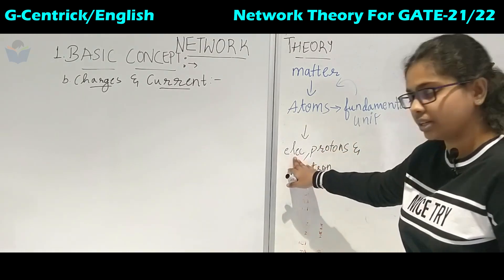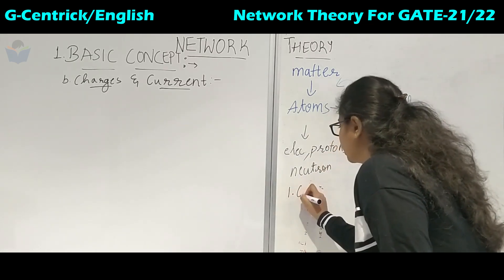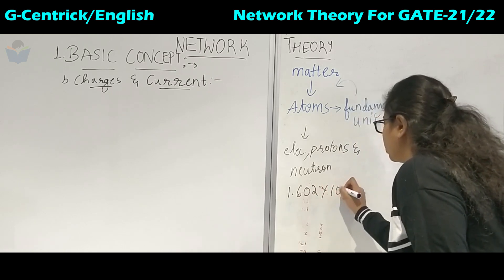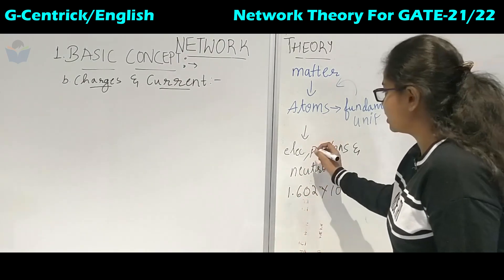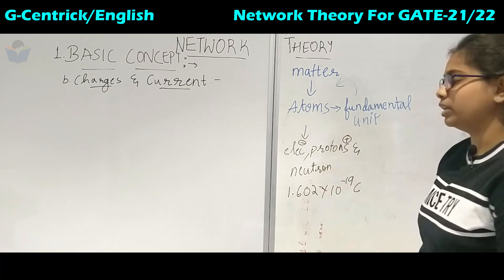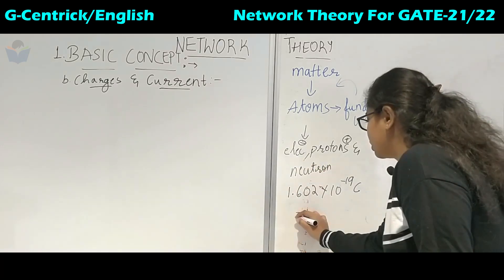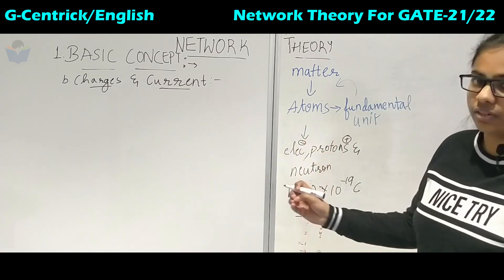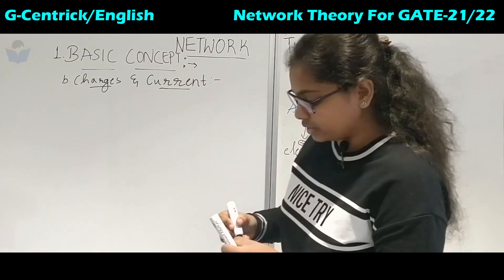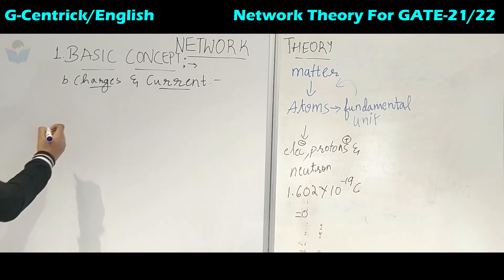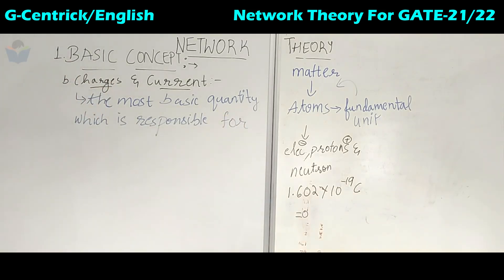This electron and this proton have the same magnitude, that is 1.602 × 10⁻¹⁹ coulombs. The difference is the electron is negatively charged and the proton is positively charged. When you add them together you get zero, which indicates that the atom is electrically neutral because they have opposite signs with the same magnitude.